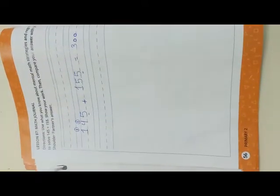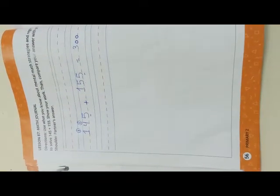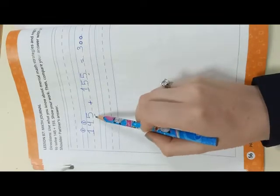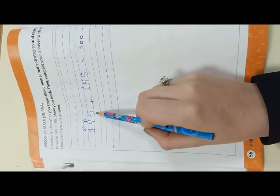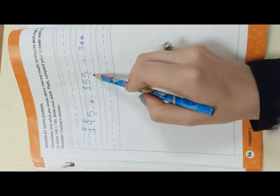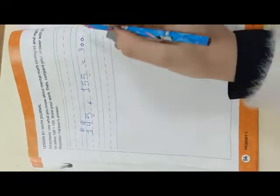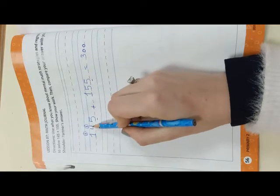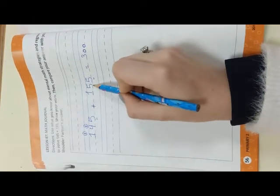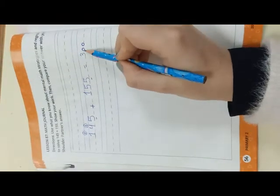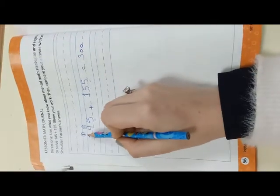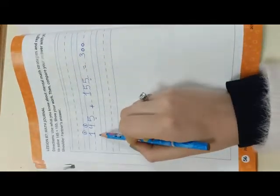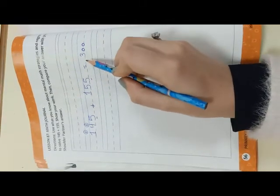Now let's open page 56 and solve this problem: 145 plus 155. I will start from the ones. In ones I have 5 plus 5, which equals 10. So I write zero and carry 1 up. Then 1 plus 4 plus 5 in tens equals 10 — write zero and carry 1. Then 1 plus 1 plus 1 in hundreds equals 3. So 145 plus 155 equals 300.